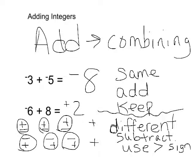So in the case of negative 6 plus 8, 8 minus 6 is 2 and since the 8 was bigger your answer is positive 2.